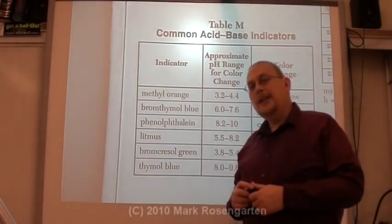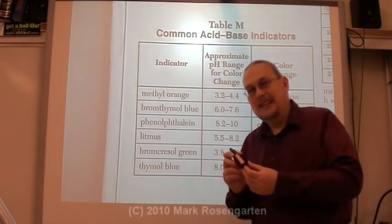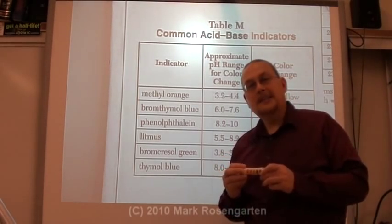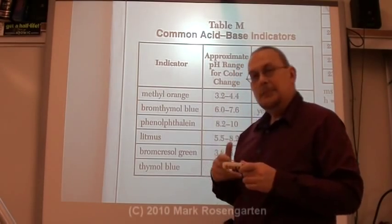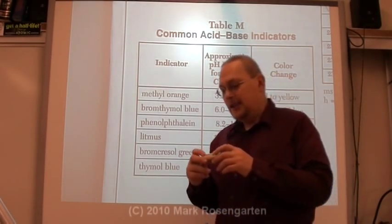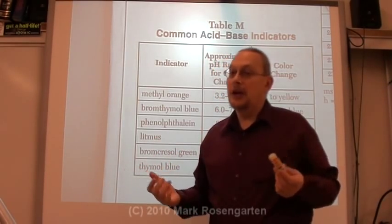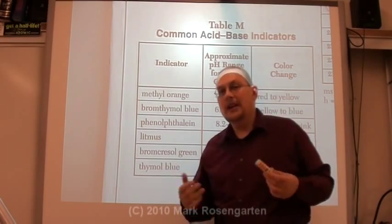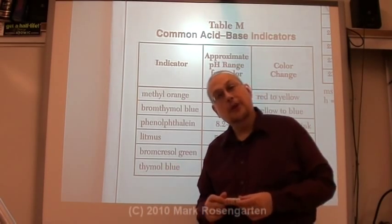There are a few ways of determining whether a substance is an acid or a base. One technique is to use pH paper — it's paper that has a different color depending on what the pH is. You take the paper, put it in your solution, and it'll tell you what the pH is. If the pH is higher than 7, you're talking about a base. If the pH is lower than 7, you're talking about an acid. And if the pH is 7, you're talking about something neutral.